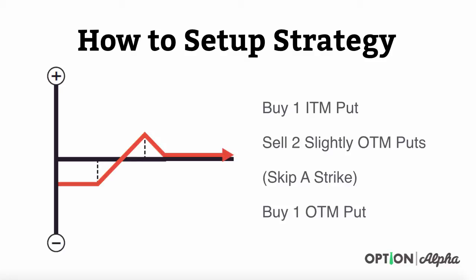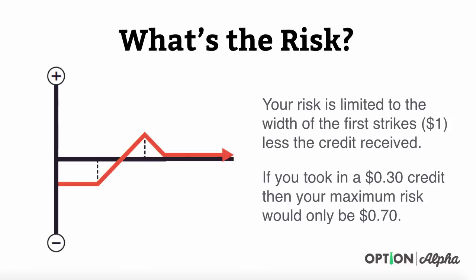After this, you're going to skip over a strike. Usually you skip over the next strike that's available and go to the next strike down and buy one out-of-the-money put option. This is what creates that broken wing side of the trade.